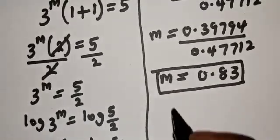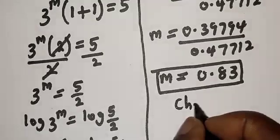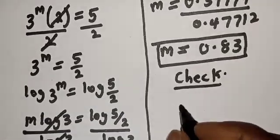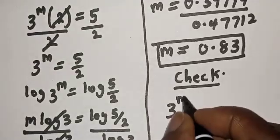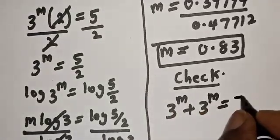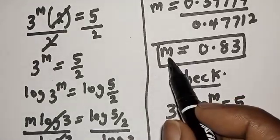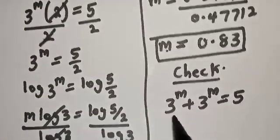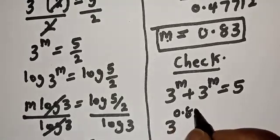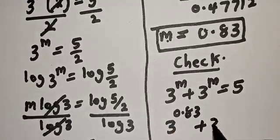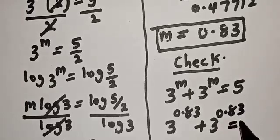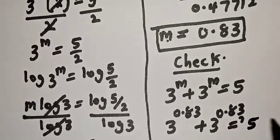We can check to confirm if our answer is right. We have the given equation 3^m + 3^m = 5, but m equals 0.83, so 3^0.83 + 3^0.83 must equal 5.